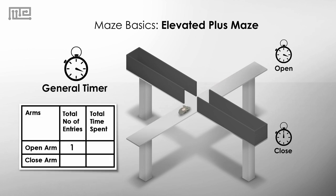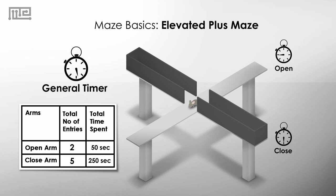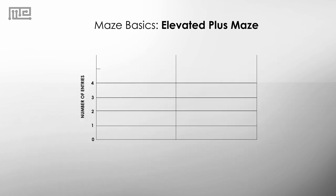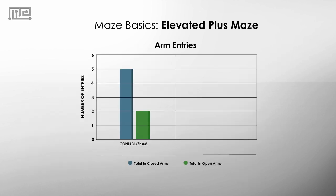The number of entries into the open and closed arms is recorded, as well as the time spent in each arm. Typically, animals will have a much greater number of arm entries into closed arms than open arms due to their natural avoidance of open spaces.